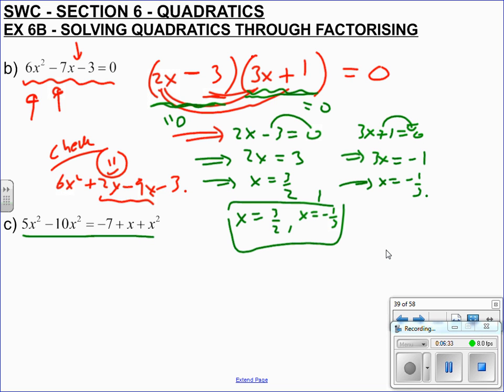Now this last bit, part c, this is not in the form of ax squared plus bx plus c is 0, which is what all of our stuff works from, whether we're completing the square or using quadratic formula or factorising. It needs to equal 0. So I'm going to get everything together so it equals 0. So first off, I'm going to put everything on the left. But 5x squared take away 10x squared, that's minus 5x squared. Equals minus 7 plus x plus x squared. I'm going to just move everything over.